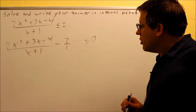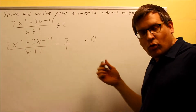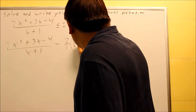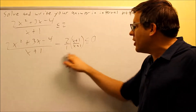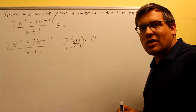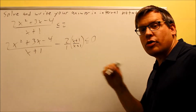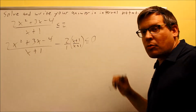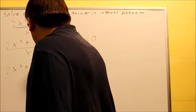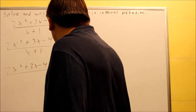We're ready now to continue. We want to get common denominators here so we have one complete fraction. So I need to multiply this by x plus 1 over x plus 1. That will allow me to get the common denominators. Then I can combine it together into a single fraction, which is what you always want before you do a table method or a number line method. Now that we have that complete, we're going to put it all together over one denominator.